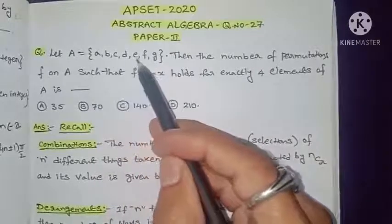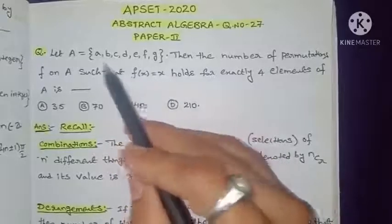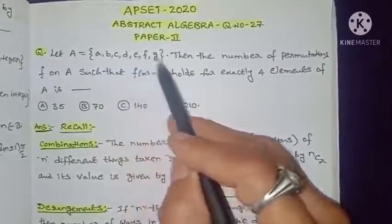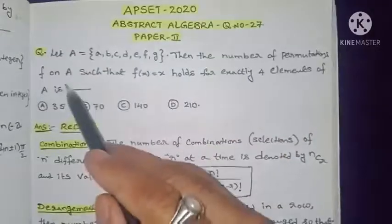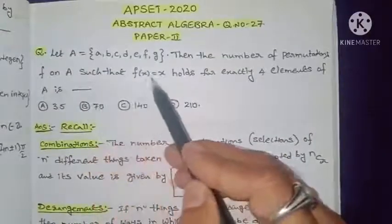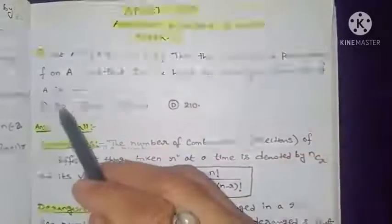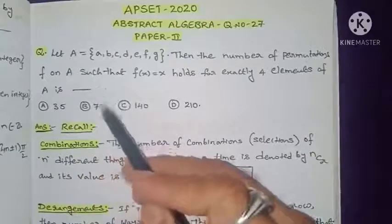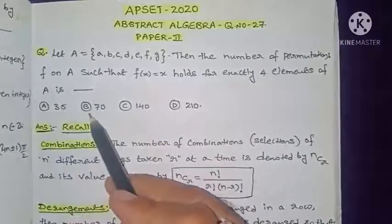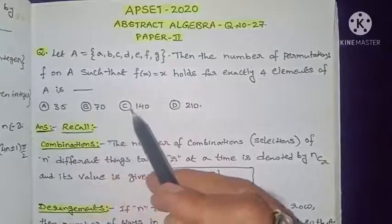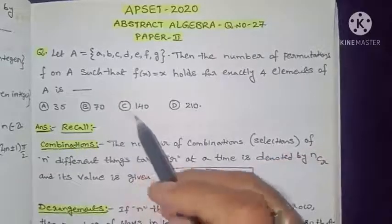The question is: capital A is a set consisting of elements a, b, c, d, e, f, g — seven elements. The number of permutations f on capital A such that f(x) = x holds for exactly 4 elements of capital A is blank. The four options are: option A: 35, option B: 70, option C: 140, option D: 210.